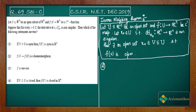A function f from set A to set B is called a homeomorphism if f is bijective, it is continuous, and its inverse is also continuous. The inverse being bijective is obvious if f is bijective, so we don't count that separately. This means that if it is a homeomorphism, it has to be bijective.